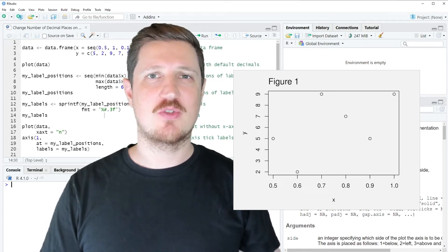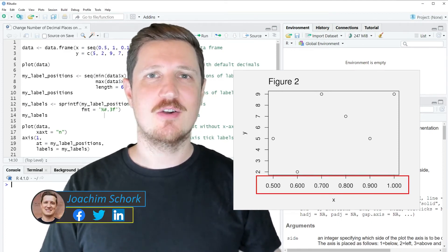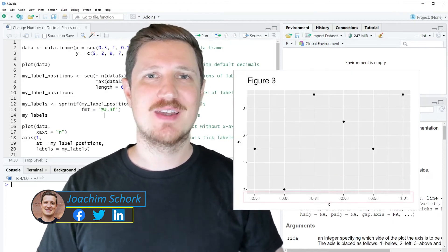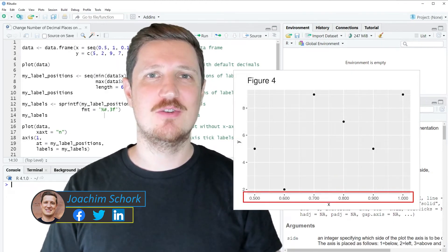This video explains how to change the number of decimal places on the x-axis of a plot using the R programming language. So without much talk, let's dive into the R code.